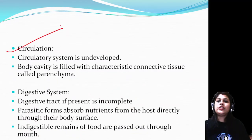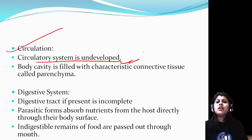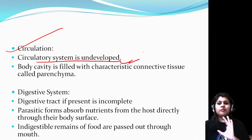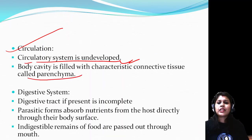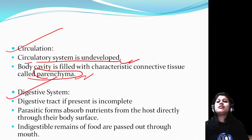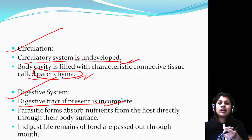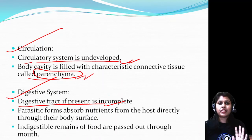Circulation: the circulatory system is undeveloped - not very advanced. The body cavity has characteristic connective tissue through which circulation takes place. Digestive system: the digestive tract is incomplete. Mouth is present but anus is absent. So undigested food returns out through the mouth.